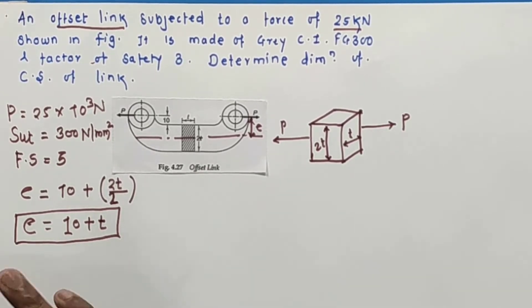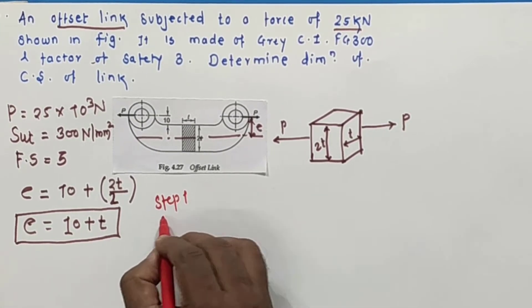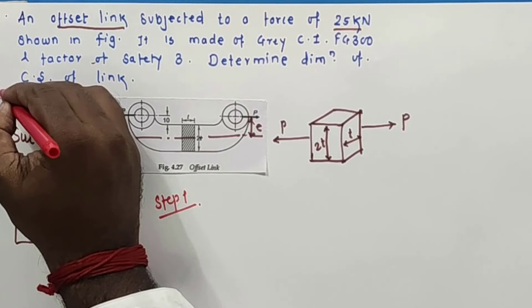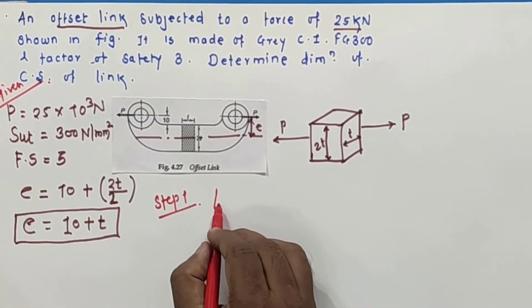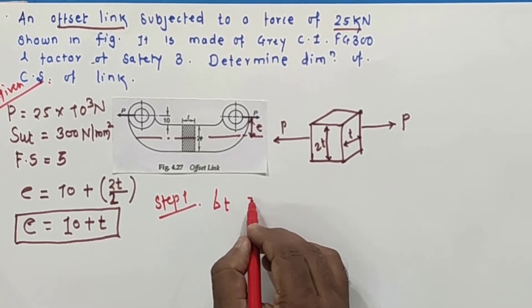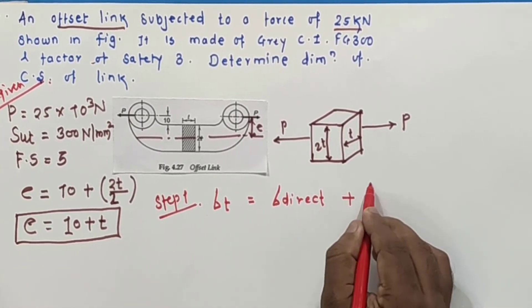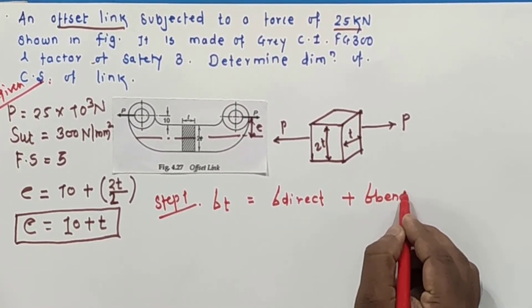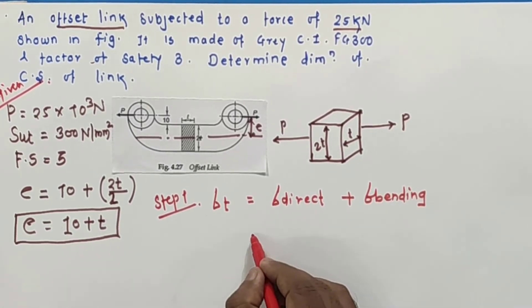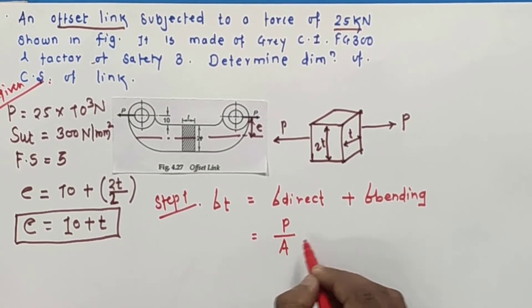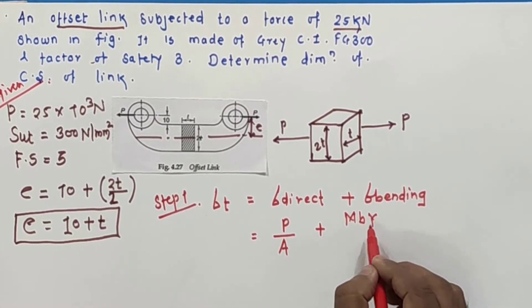We will use our regular equation. Step number 1: tensile stress is equal to direct stress plus bending stress. That is, direct stress P by A plus bending stress M·Y by I.